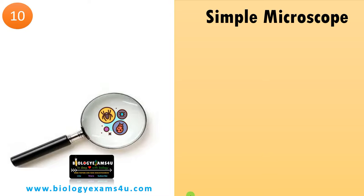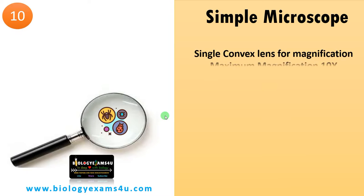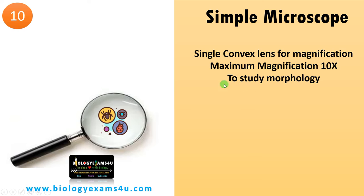Number 10 in the list is a simple microscope, also called a magnifying glass. A magnifying glass is often considered a simple microscope as it is used to magnify objects that cannot be seen with our naked eyes. It is made up of a single convex lens and the maximum magnification is 10x.